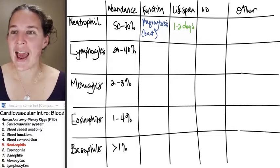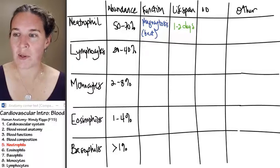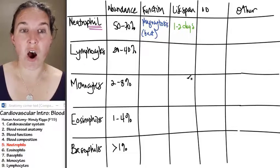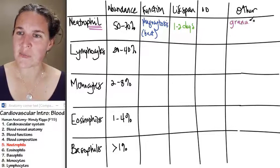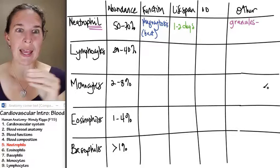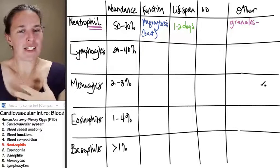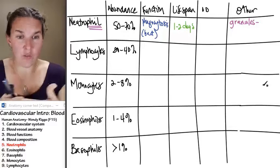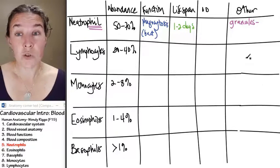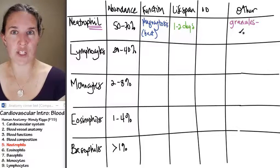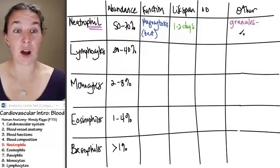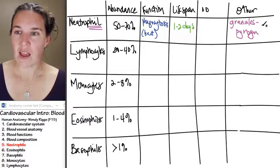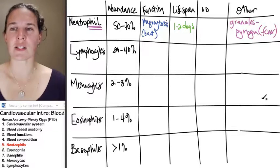They also have granules in their cytoplasm. Things that end with phil are filled with granules in the cytoplasm. Think of granules as like Kool-Aid powder where they're inside the cytoplasm and then you can dump that out into the blood. The neutrophils, one of the things that their granules can do is cause fever. The granules consist of a special chemical called a pyrogen which causes fever.